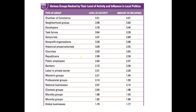These are the groups ranked by their level of activity and influence, particularly in local politics. Interestingly, the Chamber of Commerce is also by far the most prominent spender on lobbying for federal government, and they work themselves all the way down to the local level. The Chamber of Commerce represents the small business owner, so there's hardly a town in America that doesn't have a Chamber of Commerce office. We've also got neighborhood groups, developers, task forces, political parties, nonprofits, churches, and professional groups, with national businesses a little further down on the list as far as their influence in local politics.